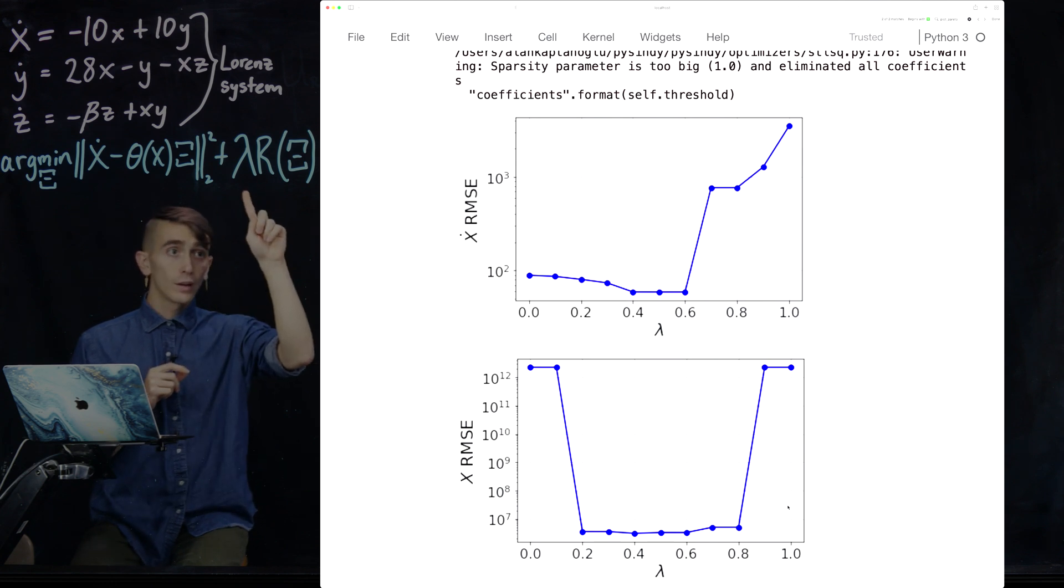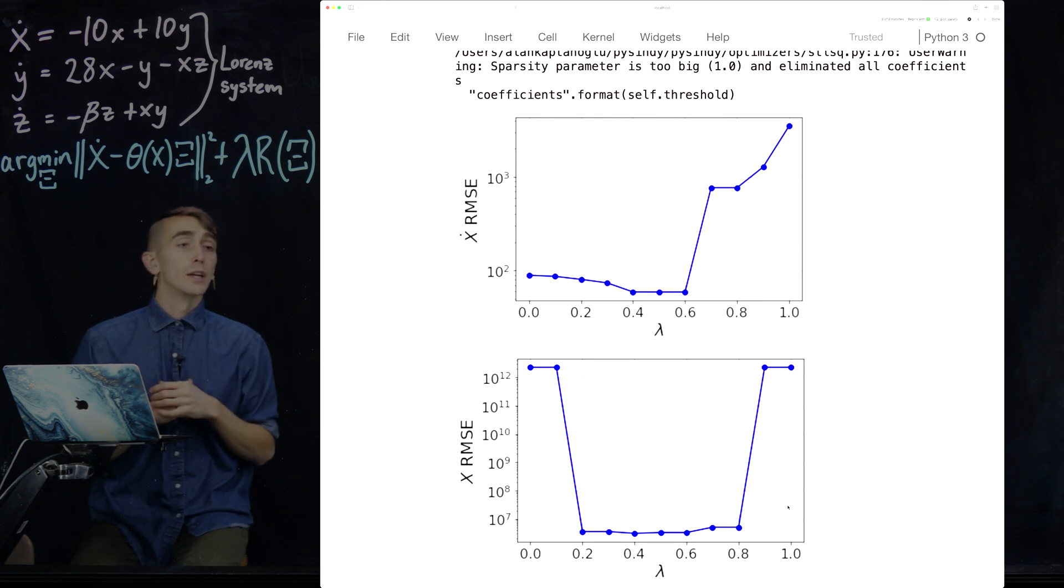So this is a pretty generic way to sort of figure out in what range you want to tune this parameter lambda. And for our system, we might choose something between 0.4 and 0.6 as a good choice for this noisy Lorenz data. It seems to work pretty well. And in general, I just wanted to point this out as sort of generic features for how these types of models would look as you scan this hyperparameter around. So thank you very much for listening, and we'll start with part two in the next video.